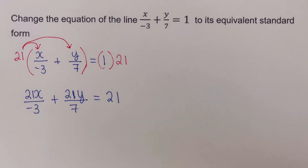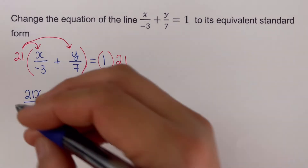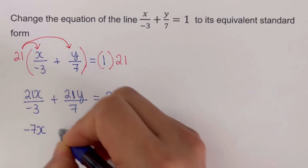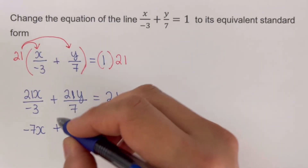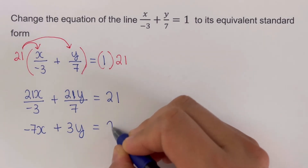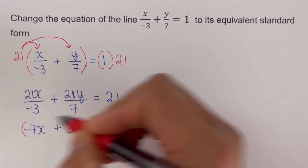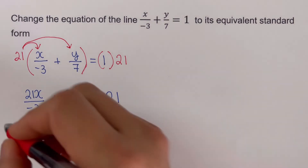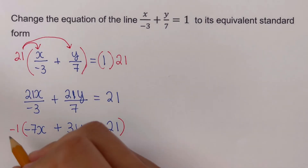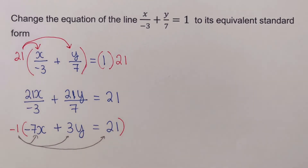Simplifying further: 21x divided by negative three is negative 7x, plus 21y divided by seven is 3y, equals 21. Notice that our a here is negative seven. For standard form, a should not be negative, so we need to multiply both sides of the equation by negative one and distribute to each term.